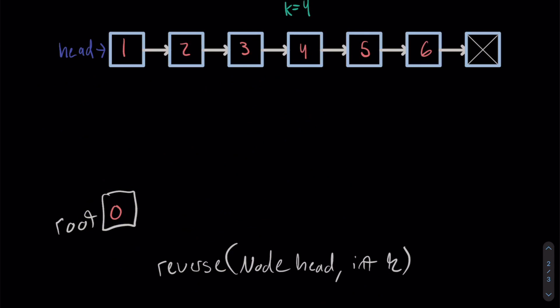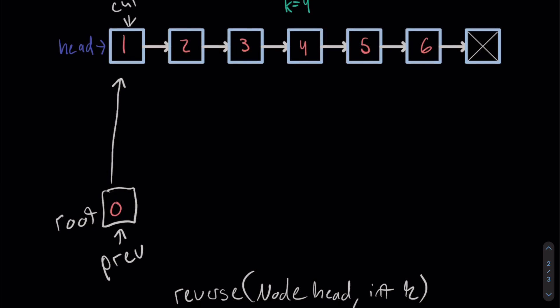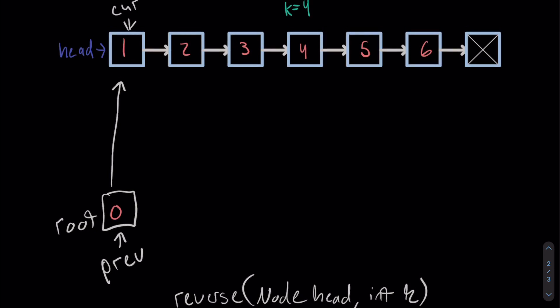We're going to say root.next is equal to head. And then we're also going to create a pointer to head and also a pointer to root. You can call these whatever you want — I just think these names make the most sense. Essentially, we're going to walk cur through the list until it's either null or until we're at a multiple of K. So if this is index 0, the first step is to move it to the fourth index.